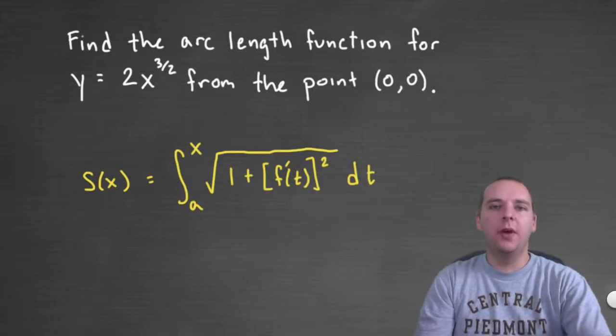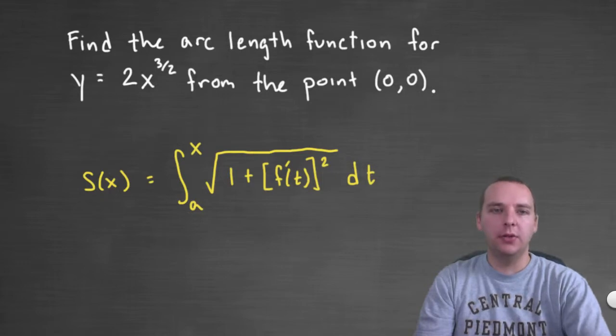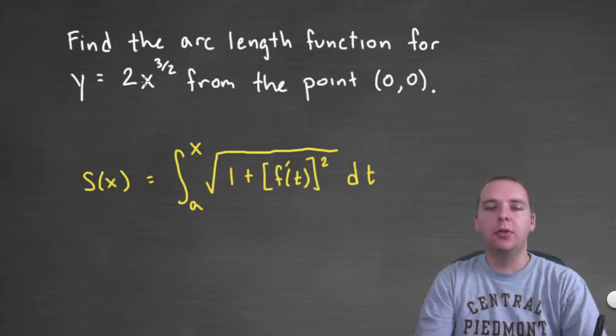In this video we're going to work an example where we find the arc length function for y equals 2x raised to the 3 halves starting from the point (0,0), starting from the origin which this curve does go through.